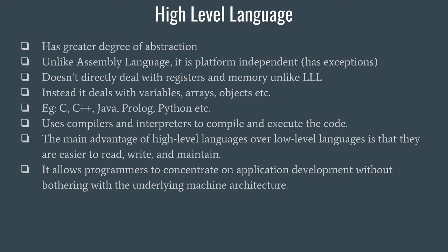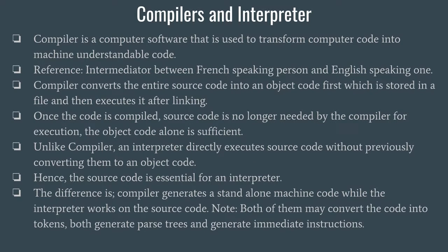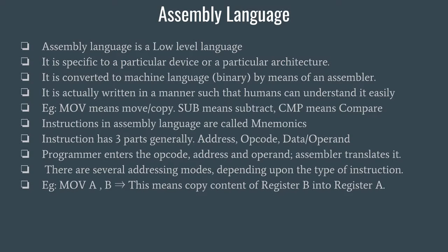In this video we shall learn about assembly language, high-level language, and compilers and interpreters. Let us first get started with assembly language. Assembly language is a low-level language and is highly dependent on the architecture of your computer. When you write a piece of code in some assembly language, that code is specific to a particular architecture — it might work on two or three more architectures, but it is not a general code for different architectures.